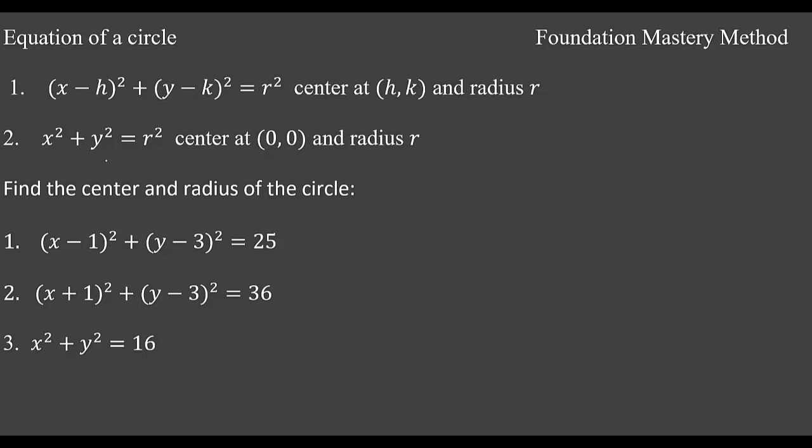Now if you have x² + y² = r², then you can clearly see that h is 0 here and k is 0. So center will be at (0, 0) and radius will be r.